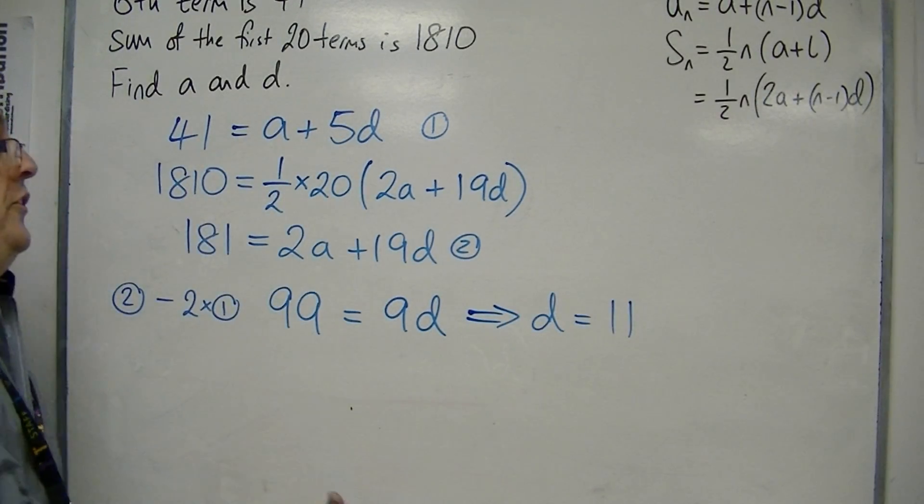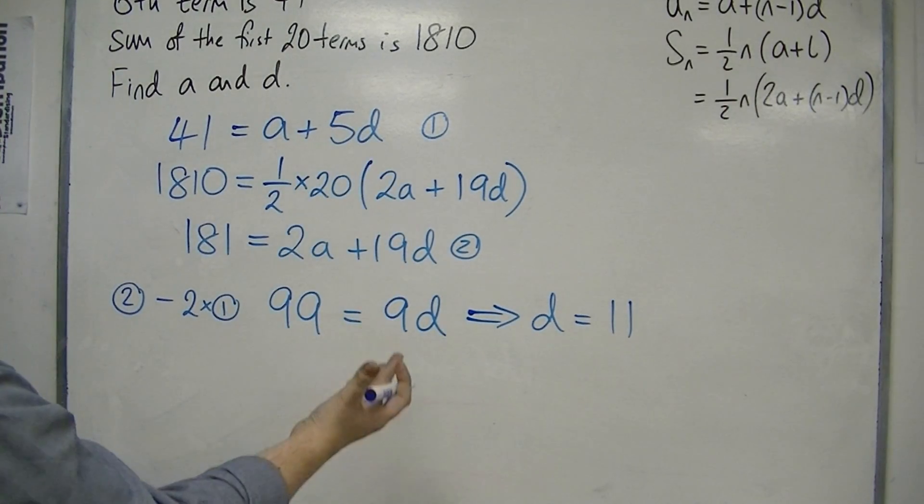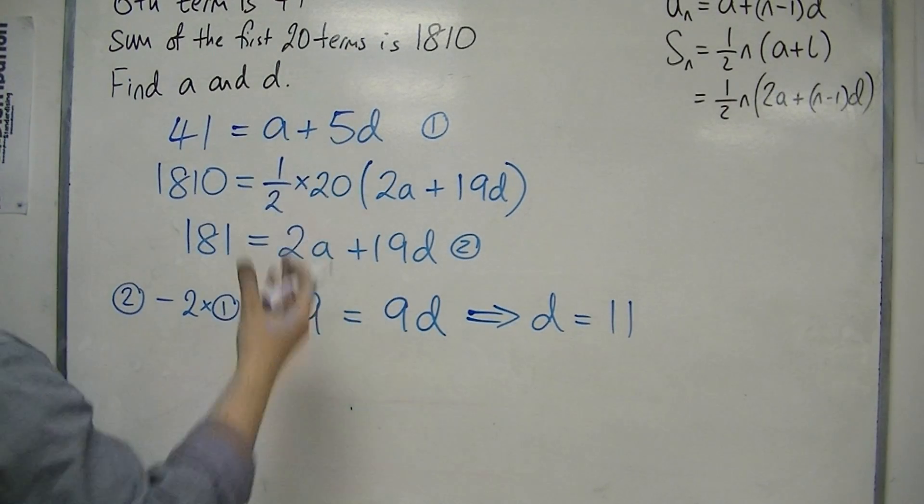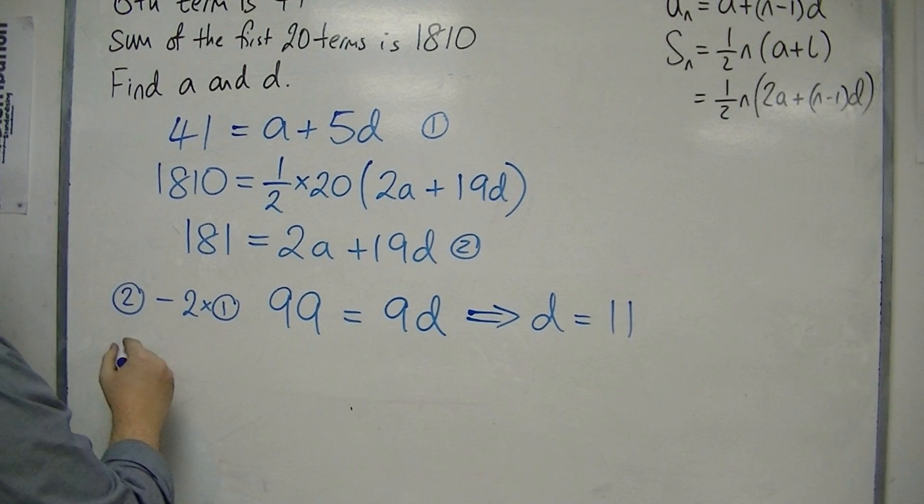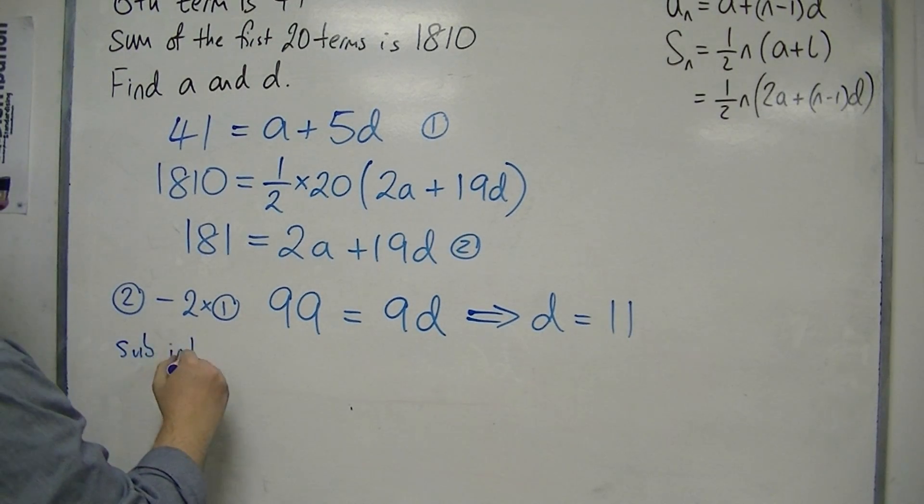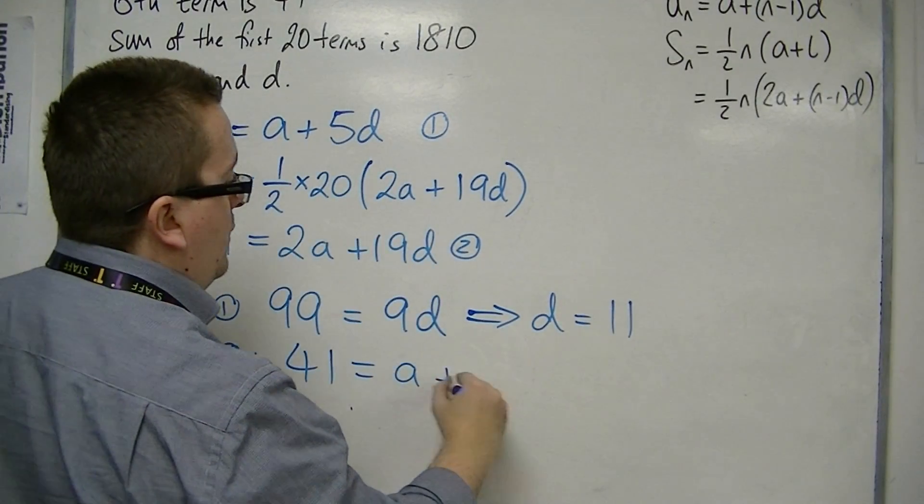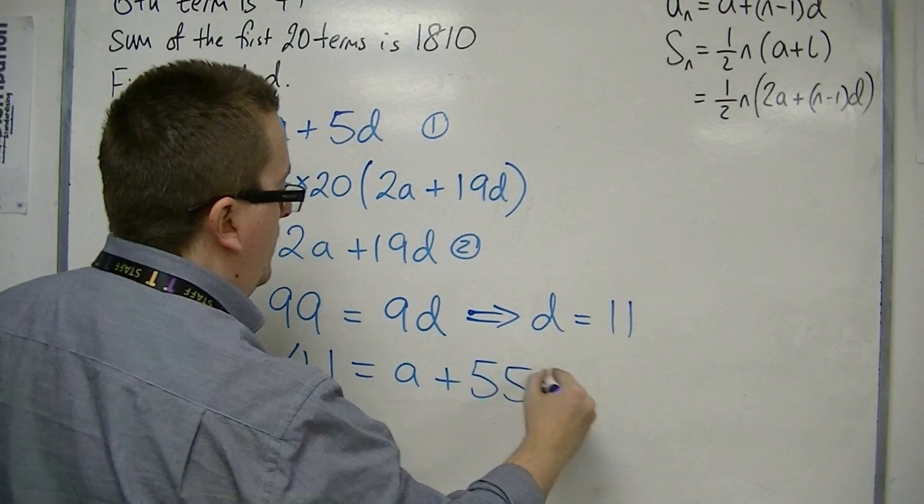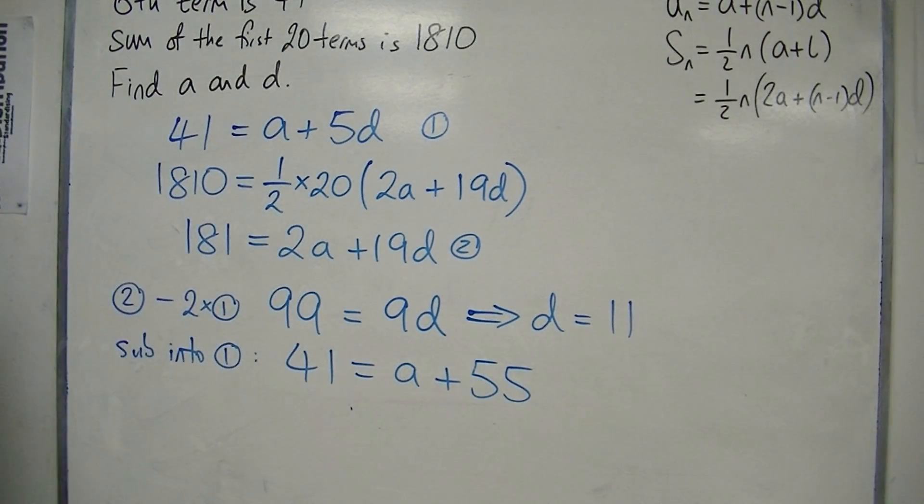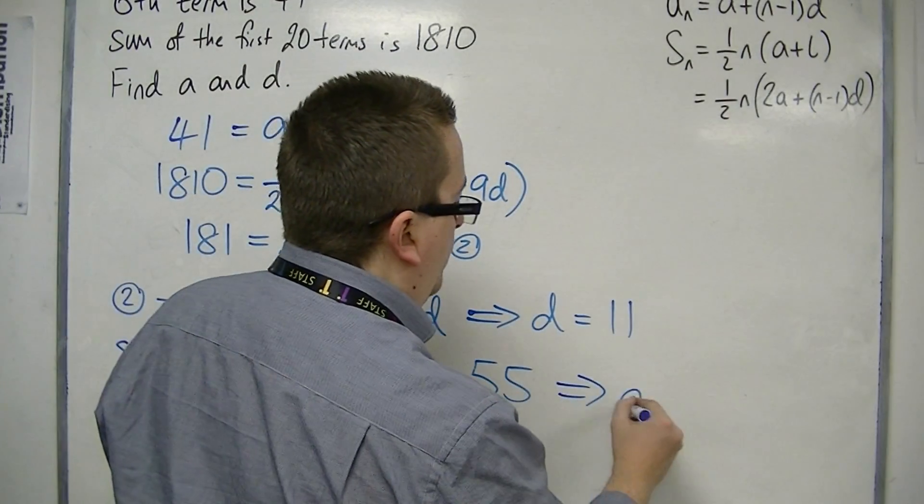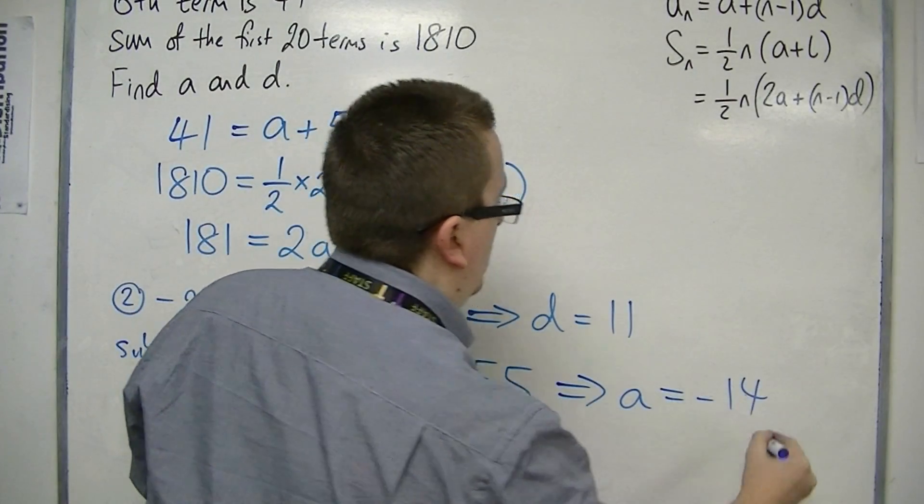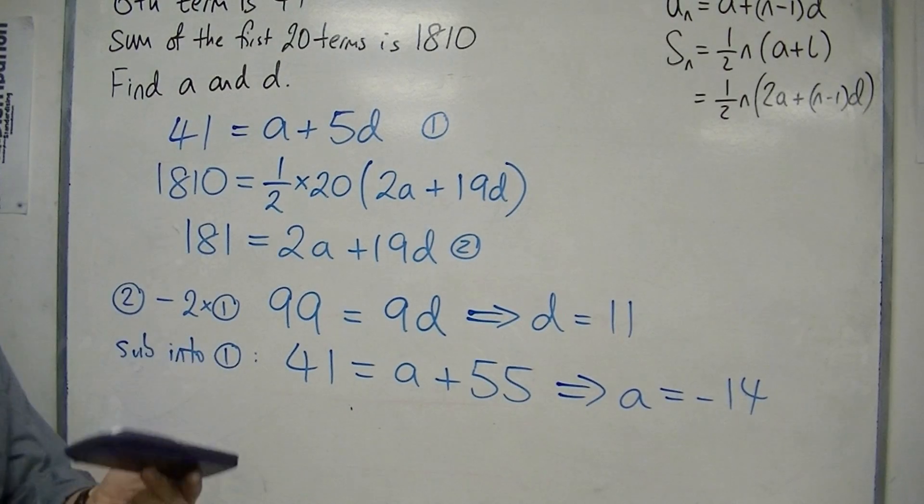Now that I've got D, I can substitute that into one of the two original equations. The first one will probably be the easiest. So, sub into 1. So, 41 is A plus 5 lots of D, so 5 lots of 11 is 55. So, 41 take away 55 means that A must be minus 14. And that's found A and D, as required.